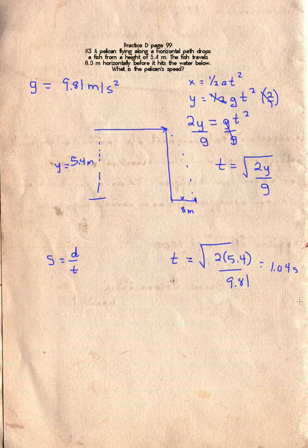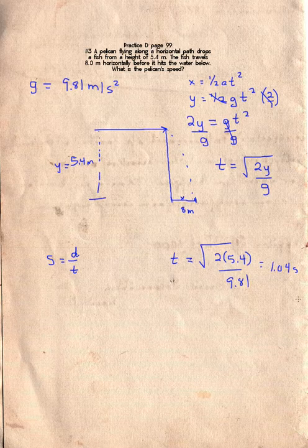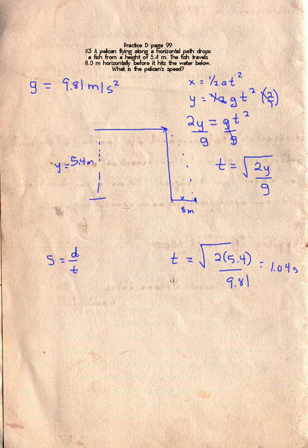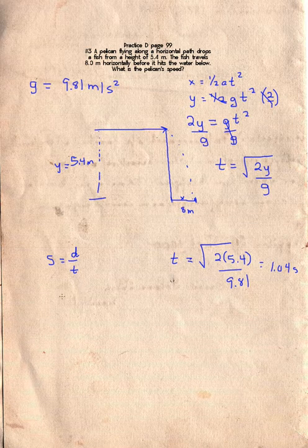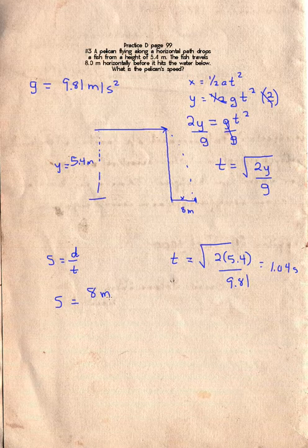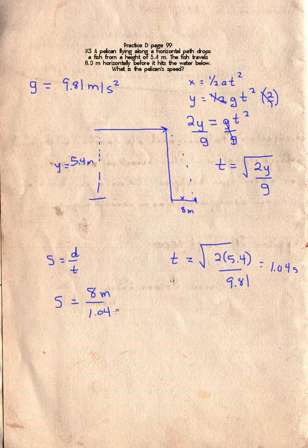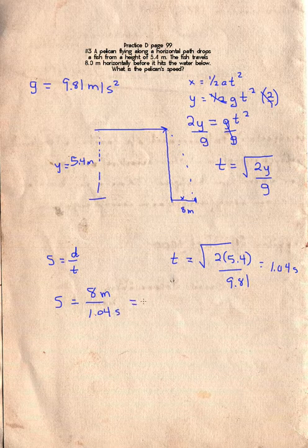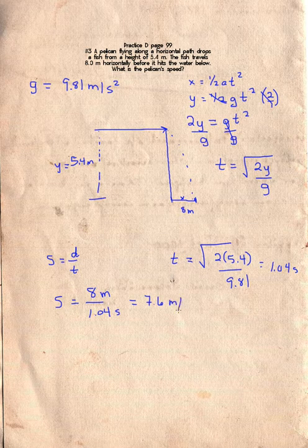So now I know how long it took the fish to fall. I know the distance that it traveled as it was falling. During the time interval, it traveled 8 meters. So the speed of the fish is equal to 8 meters divided by 1.04 seconds, and that's going to give me a velocity of 7.6 meters per second.